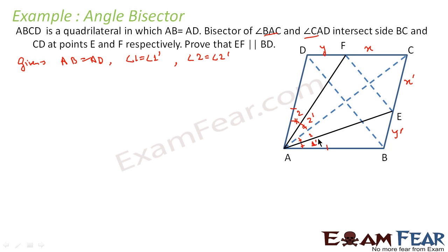In triangle CAB, the ratio X dash by Y dash comes from AB by AC by the angle bisector theorem. And in triangle CAD, AC is common and AD equals AB. So here also AD by AC equals X by Y. Using these two triangles we can get the answer.